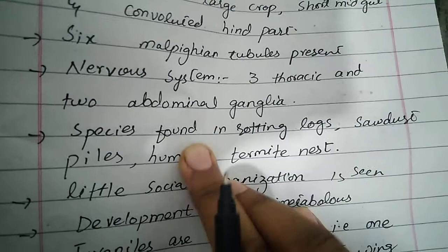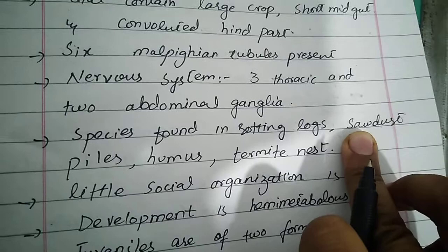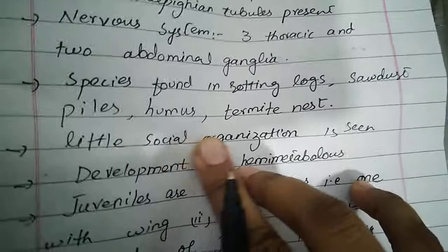Little social organization is seen in these insects. Development is hemimetabolous, meaning no pupal stage is present, or development is incomplete.